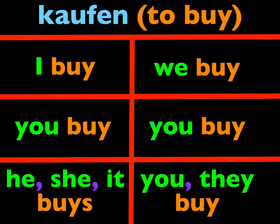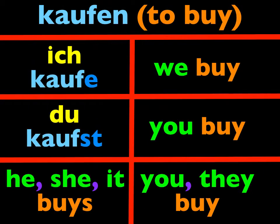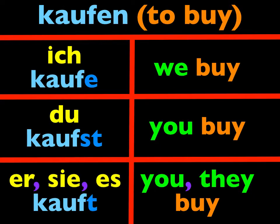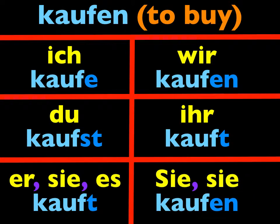We learned that the present tense of kaufen, for example, is ich kaufe, du kaufst, er kauft, wir kaufen, ihr kauft und sie kaufen. Most verbs have similar endings. You take the -en off the infinitive, that leaves you with the stem of the verb kauf, and then you add those endings.